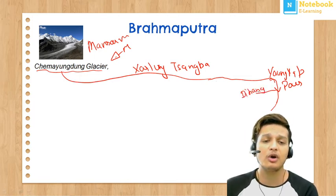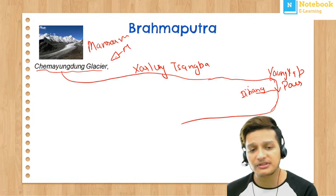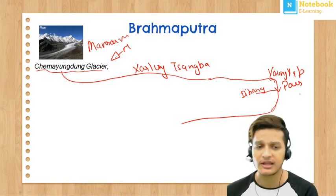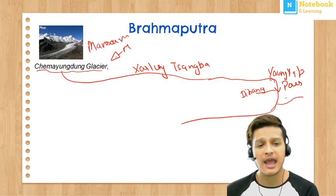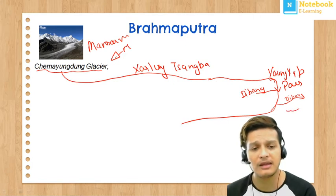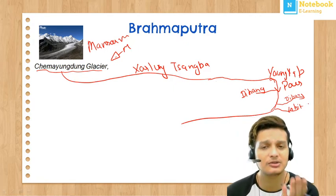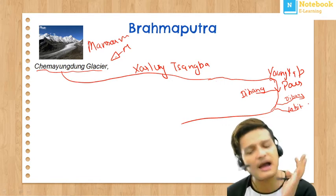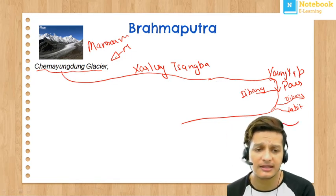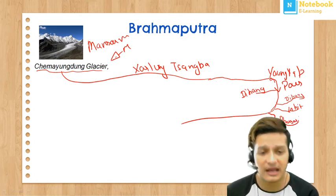So we know this river as Dihang from Arunachal Pradesh onwards. The first left bank tributary to join is the Dibang River, then the Lohit River joins as the second one, and after that the Dhansiri River also joins.